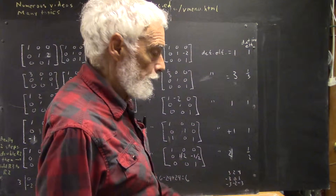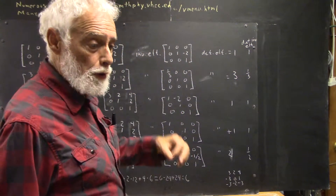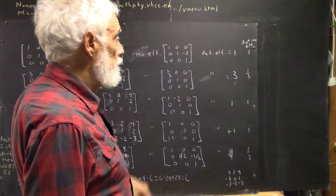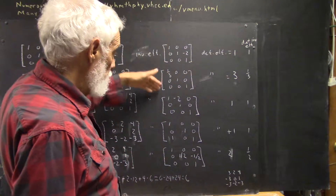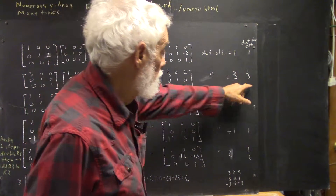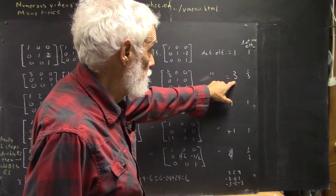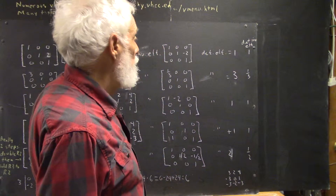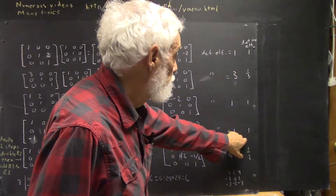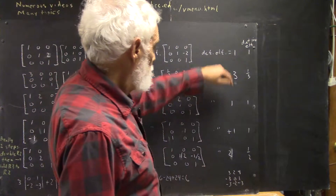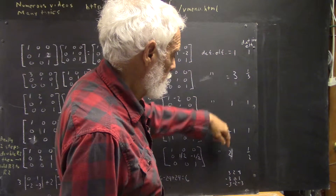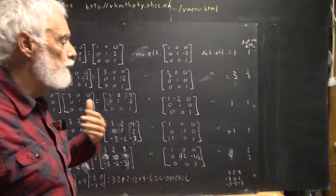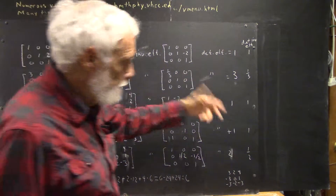The determinant of the inverse of the elementary matrix — we've established that the determinant of the inverse of a matrix is the reciprocal of the determinant of the matrix. You can always take the determinant of the inverse matrix and verify that the determinant of the elementary matrix and the determinant of the inverse are reciprocals. In most cases these determinants are 1, so 1 is the reciprocal of itself. But in this case the determinant is 3, so the determinant of the inverse is 1/3. Determinant is 2, so the determinant of the inverse is 1/2.